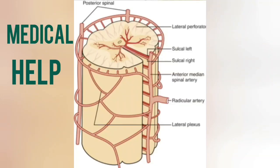Here is the diagram of the spinal cord, which is receiving blood supply from various blood vessels. As stated, the spinal cord receives its blood supply from three main longitudinal arterial channels extending along the length of the cord. In this diagram, I am showing the anterior medial sulcus, from where the anterior spinal artery runs through the sulcus.